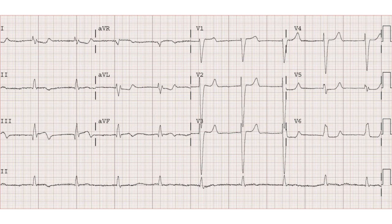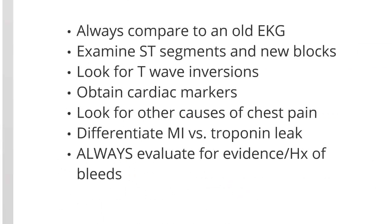Now that we've talked about the various findings in acute coronary syndrome, let's review the keys to identifying acute coronary syndromes on the EKG. Always compare to an old EKG to find new findings. Examine ST segments and look for new blocks. Look for T wave inversions. Always obtain cardiac markers. If the clinical story and EKG findings are not convincing for acute coronary syndrome, look for other causes of chest pain. Differentiate between a true MI versus a troponin leak — are the troponin elevations truly high, or is it just strain put on the heart by things like hypertension? Always evaluate for evidence or history of recent bleeds, because acute coronary syndromes need to be anticoagulated, and those with recent bleeds have a poorer outcome if anticoagulated.